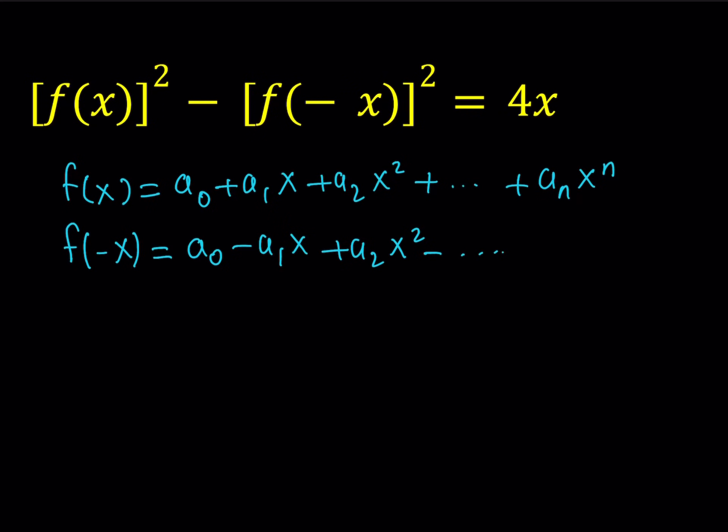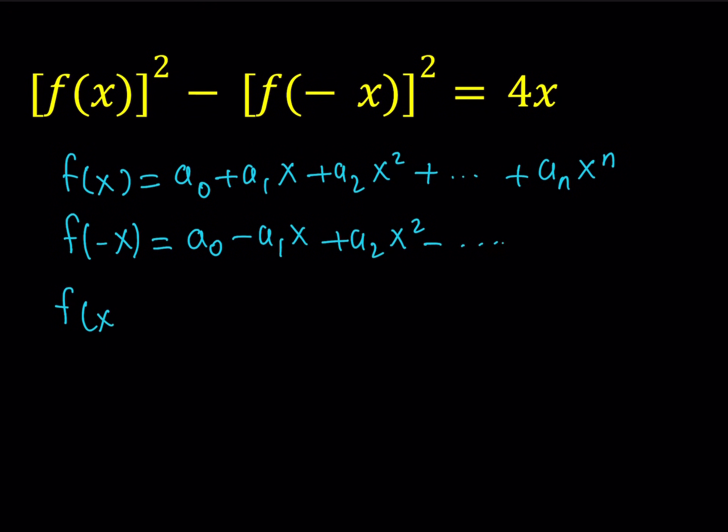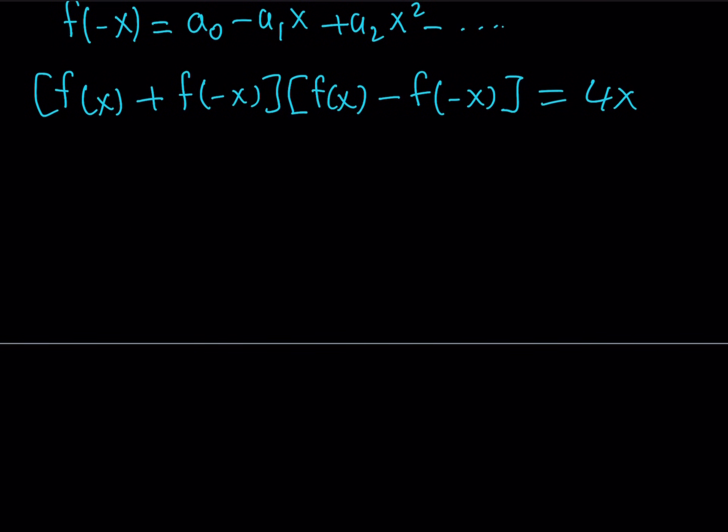Before I substitute all this into my expression, I'd like to factor this because this is a difference of two squares. We can factor it and write it as f of x plus f of negative x times f of x minus f of negative x. This is good because it's going to help us simplify. Imagine trying to square this polynomial - it's easier this way. a squared minus b squared factors as a plus b, a minus b.